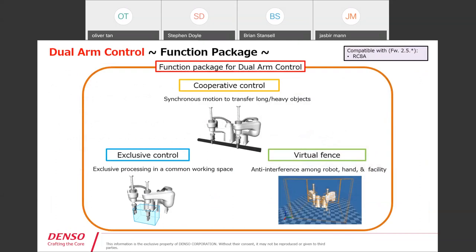The dual arm function includes two features I've already discussed plus a third called cooperative control. Cooperative control allows you to use both robot arms in a synchronized manner — for example, if a part requires a longer reach than a single robot may have, you can use two robots synchronized to move the part together. Also, if the payload isn't enough, you can double it by using two robots. Exclusive control and virtual fence are both included in the dual arm package.